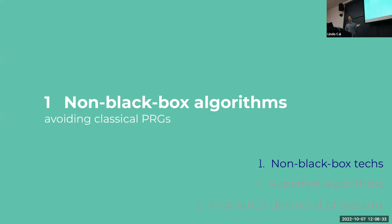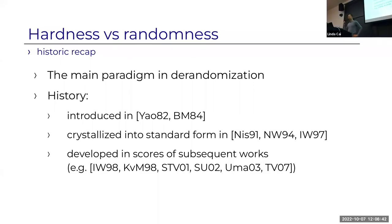We'll start with the background on new directions. I'll first talk about non-black-box techniques that do derandomization while avoiding the classical paradigm of PRGs. Hardness versus randomness—I'm assuming most of you have heard of it—is the main paradigm in derandomization. It started in the early 80s, crystallized into what we know today in the late 80s and early 90s, and continued to develop. There are still open questions being studied, but most of what we know is from that era.